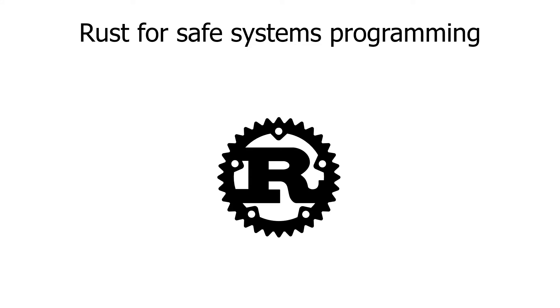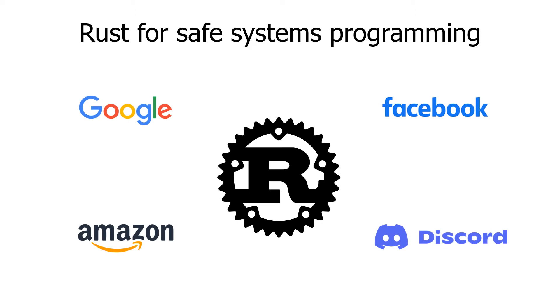Preventing memory safety bugs are critical to the security of system software. Recently, Rust programming language is gaining popularity in systems programming because it promises memory safety without costly runtime checks such as garbage collection. Therefore, many large companies already started adopting Rust in their production code.